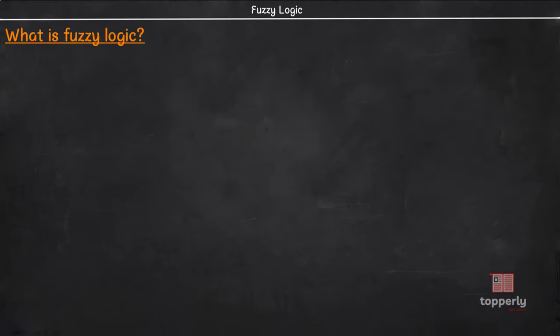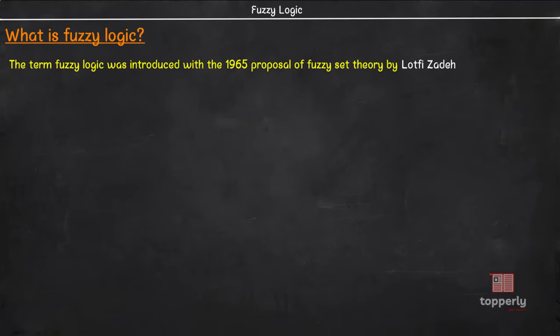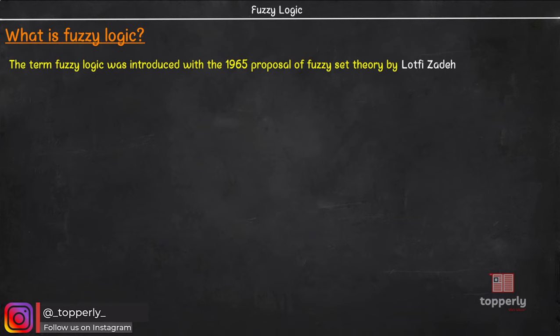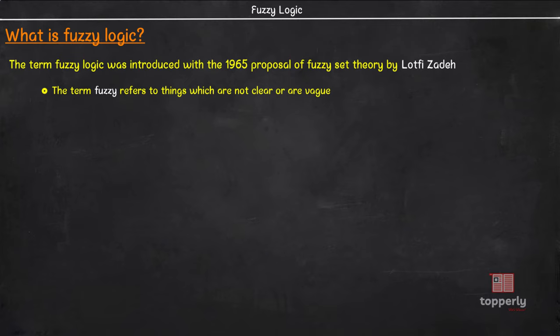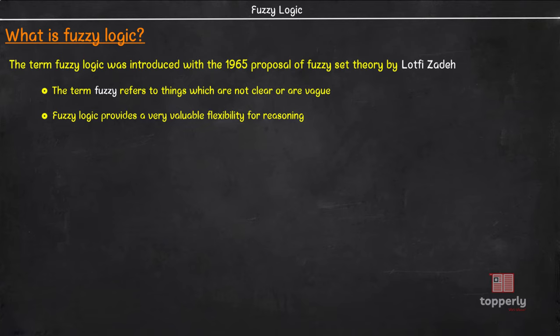What is Fuzzy Logic? The term Fuzzy Logic was introduced by Lotfi Zadeh in 1965 with the proposal of Fuzzy Set Theory. The term Fuzzy refers to things which are not clear or are vague. In the real world, many times we encounter situations where we can't determine whether the state is true or false. In such cases, Fuzzy Logic provides a very valuable flexibility for reasoning. It resembles human reasoning in many ways and hence we can consider uncertainties or inaccuracies of any situation.